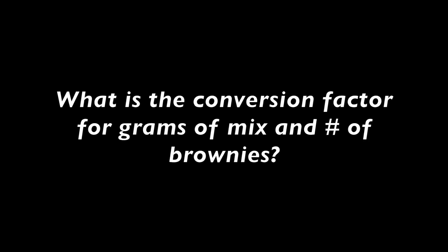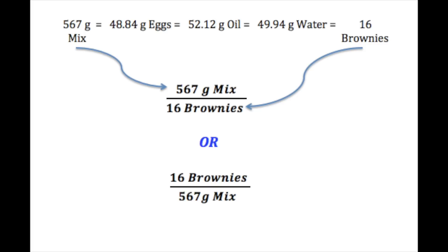What would be the conversion factor for grams of mix and number of brownies? Going back to our equivalencies, we can see that 567 grams of mix would give us 16 brownies. We can write that in two ways: one with grams on top in the ratio and brownies on the bottom, or in reverse.